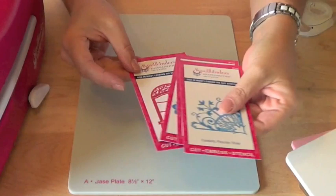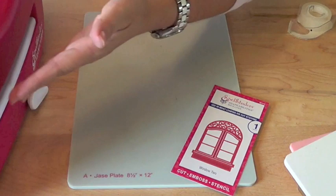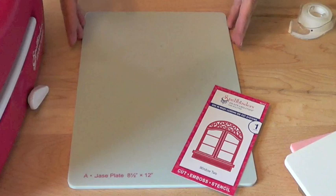I'd like to start off using the Window 2 Die Template. Now the Grand Caliber Machine has two sweet spots on either side of the machine. This is going to ensure a deeper cut and a more even cut.